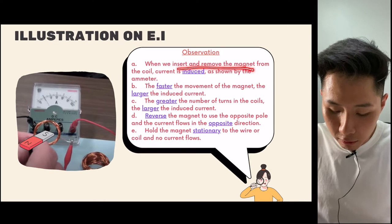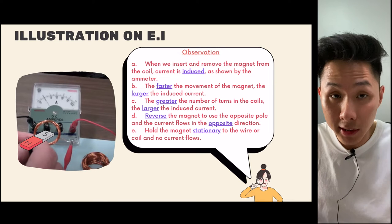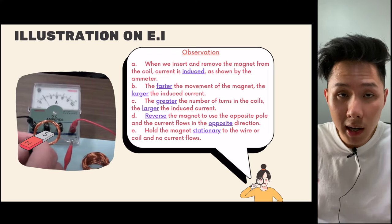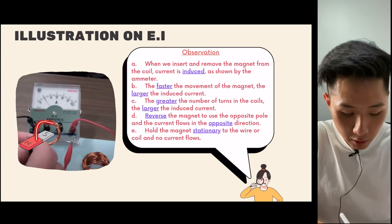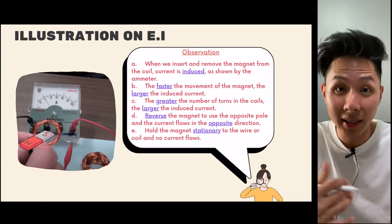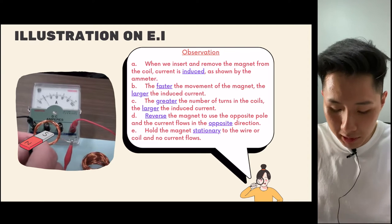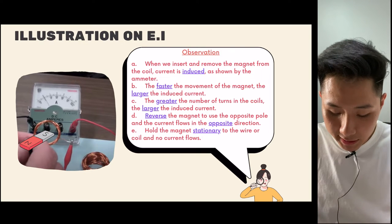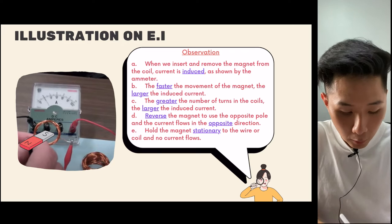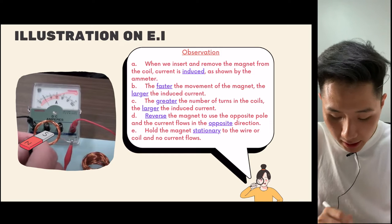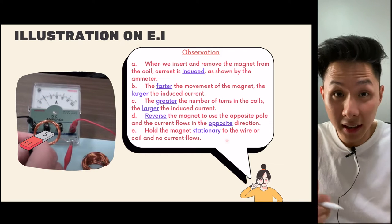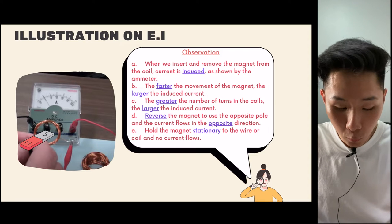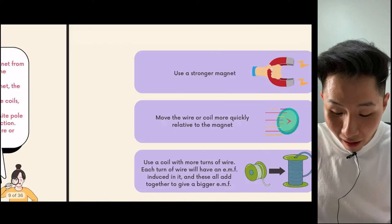When you insert and remove the magnet from the coil, current is induced. The faster the movement of the magnet, the larger the induced current. The greater the number of turns of wire, the larger the induced current. When you reverse the pole of the magnet, the current flows in the opposite direction. Hold the magnet stationary and no current will flow. I'll put a link in the description so you can see how this works in real life.